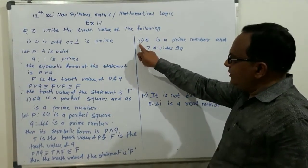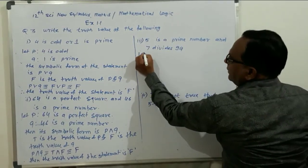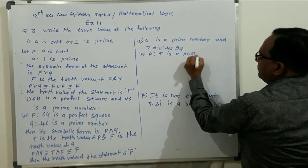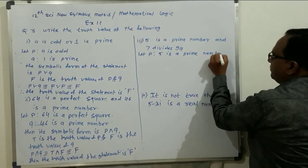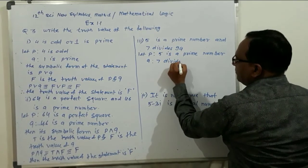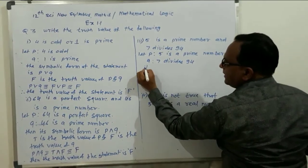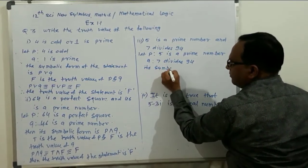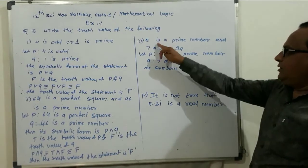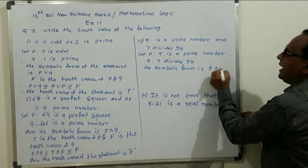Third: 5 is a prime number and 7 divides 94. Let P: 5 is a prime number, and Q: 7 divides 94. Two statements are connected by AND, so the symbolic form is P and Q.